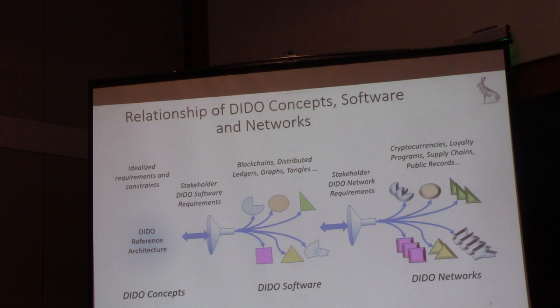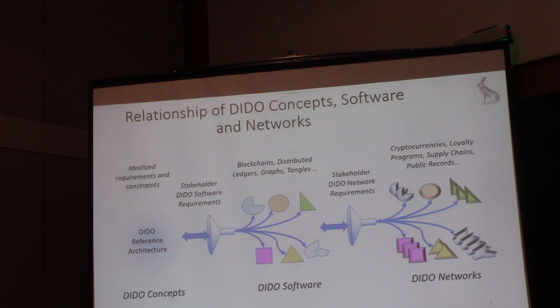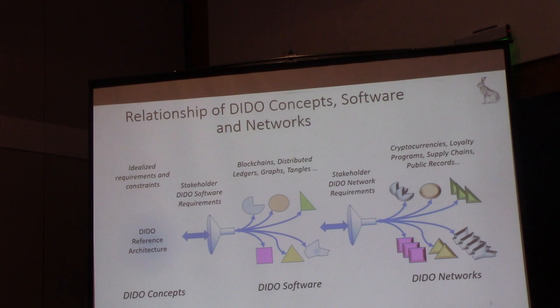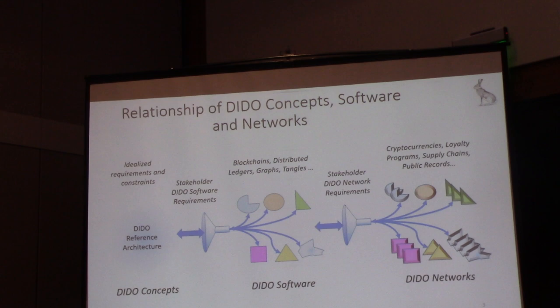This is our concept diagram of relationships within the DIDO concept software network. Moving from left to right, you have idealized requirements and constraints, then stakeholder DIDO software requirements. Ultimately that comes into what I call an incarnation — the blockchains, distributed ledger, hashgraph, tangle, hypergraph, whatever that happens to be. From there you take the stakeholders; for example, a utility stakeholder would come in and say, okay, I'm going to use this — how do I use it?